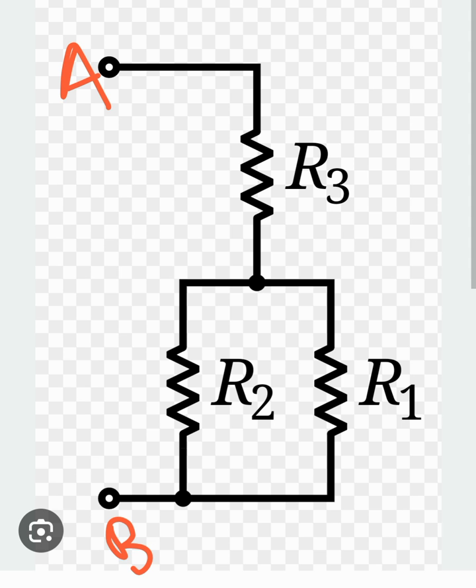We see that resistor R3 comes in series with the parallel combination of R1 and R2. The two points of R1 and two points of R2 are tied to each other, therefore they come across each other and are said to be in parallel to each other.